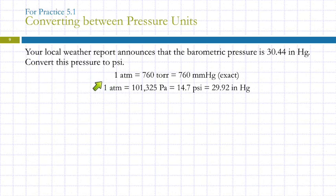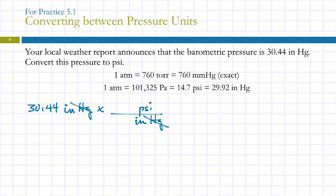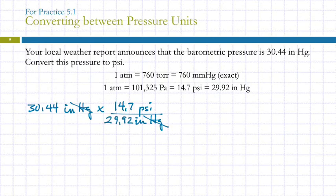Conversion factors for pressure will be shown on an exam, except you need to know that one atmosphere equals 760 torr. For example: your local weather report announces that the barometric pressure is 30.44 inches of mercury — convert this to PSI. Starting with 30.44 inches of mercury, we want PSI, so PSI goes on top and inches of mercury goes on the bottom so they cancel. Everything here is equal to one atmosphere, so we find 14.7 PSI and 29.92 inches of mercury.